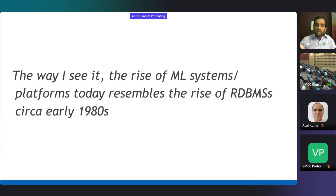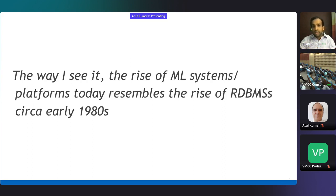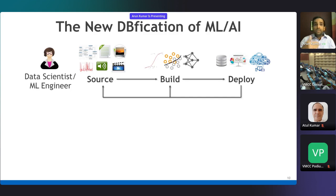The way I see it, this rise of ML systems and platforms resembles the rise of relational DBMSs as a category of software systems circa the early 1980s—when people saw the merits of the relational model and SQL, and started building software systems to democratize access to those sorts of computations. The same thing is happening with ML computations. That is what I call the new DBification of ML AI: systematizing and building out these sorts of systems and platforms to make it easier, faster, and cheaper to adopt ML and AI.